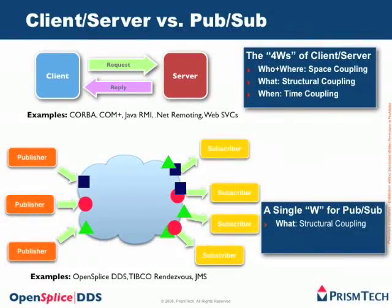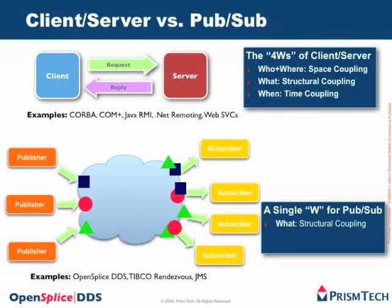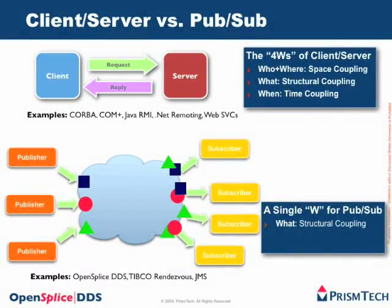If we compare this with PubSub, in PubSub the only thing that matters is the what — the structural coupling. Typically you have publisher and subscriber. Publishers say that they produce some kind of data, so in this picture you see publishers producing blue squares, red circles or green oranges, and subscribers interested in any combination of those. Then it is the PubSub technology that takes care of delivering information being produced by a specific publisher to subscribers that are interested in it.